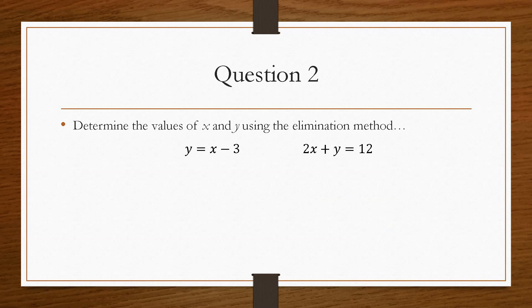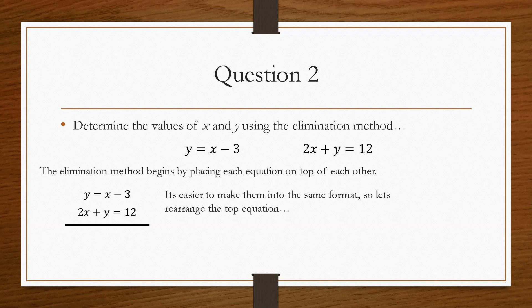So Question 2 says, determine the values of x and y using the elimination method. So it's the same equations, but we're just going to do the other method to see if we get the same answers. Now the elimination method begins by placing the two equations, one on top of each other. Now it is a good idea, and it makes it much easier, if we rearrange the equations to be in the same format. So we'll rearrange the top equation to have x, y equals minus 3. So we get minus x plus y equals minus 3. And then we keep the 2x plus y equals 12 the same.